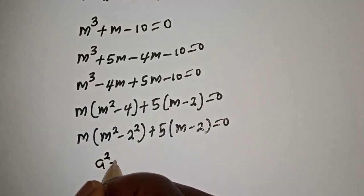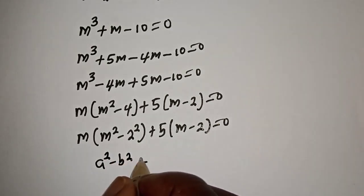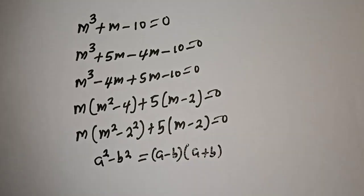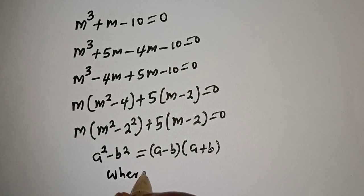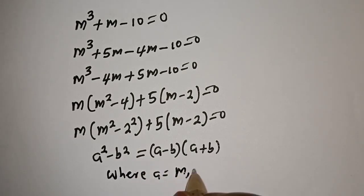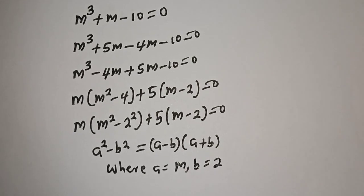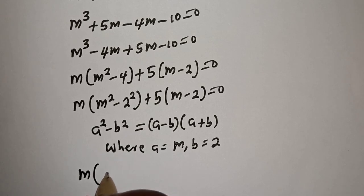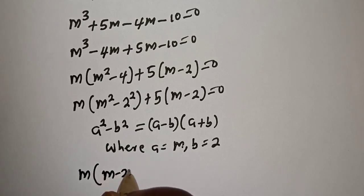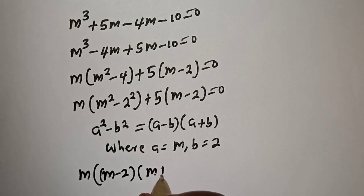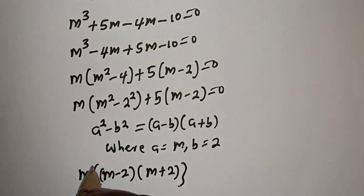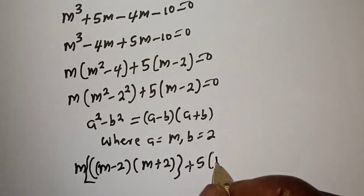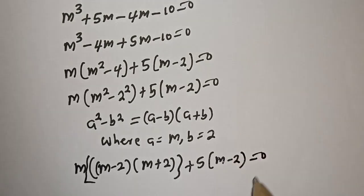Now, if you have a squared minus b squared, this is equal to a minus b multiplied by a plus b, where a is equal to m and b is equal to 2. This gives m bracket, m minus 2 multiplied by m plus 2, plus 5 bracket m minus 2 is equal to 0.